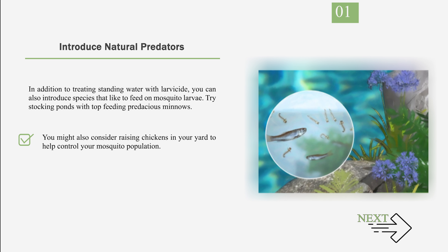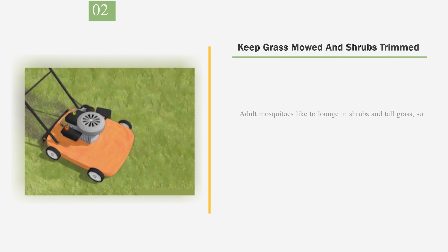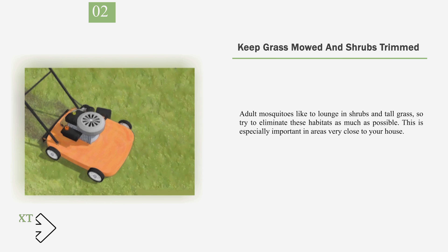You might also consider raising chickens in your yard to help control your mosquito population. Number 2: Keep grass mowed and shrubs trimmed. Adult mosquitoes like to lounge in shrubs and tall grass, so try to eliminate these habitats as much as possible. This is especially important in areas very close to your house.